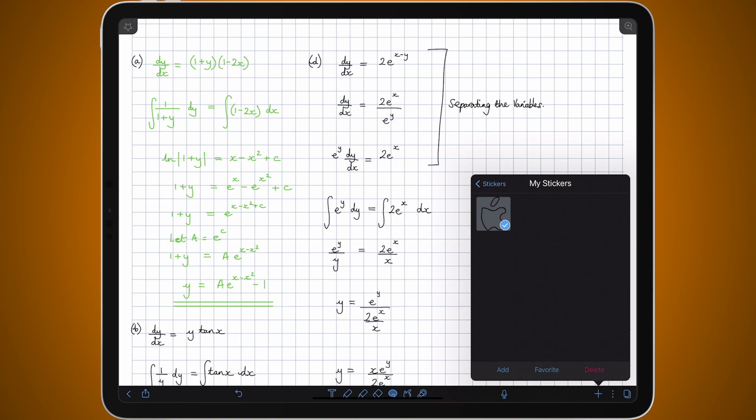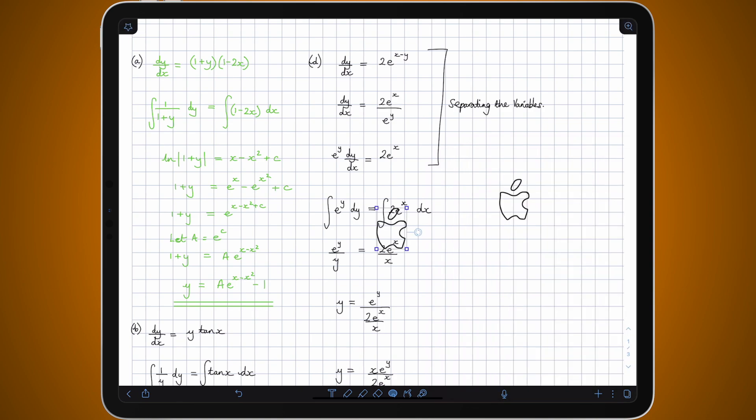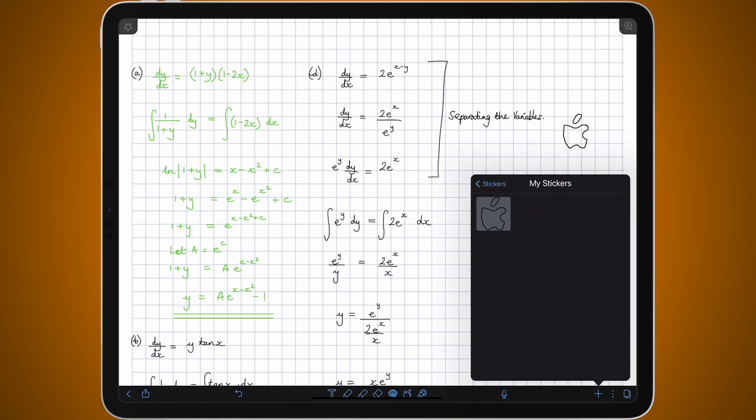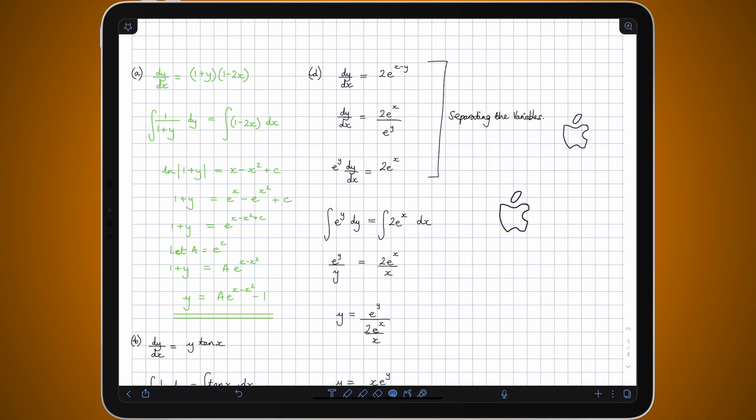All I have to do is just tap on the apple, tap add, and it's now been added so I can now drag it around and place it wherever I want to and I can resize it and put it wherever I want to in my notes. And as you saw if I go back into my stickers when I tap on a sticker I can favorite it or I can just delete it if I want to get rid of it and I no longer want to have it there.